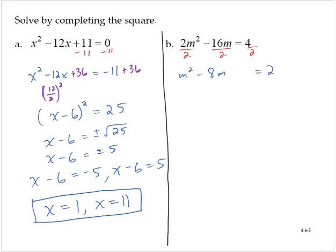Completing the square: 8 divided by 2 is 4, and 4 squared is 16. I will add 16 to both sides of the equation. The left-hand side factors as m minus 4 squared. The right-hand side simplifies to 18.